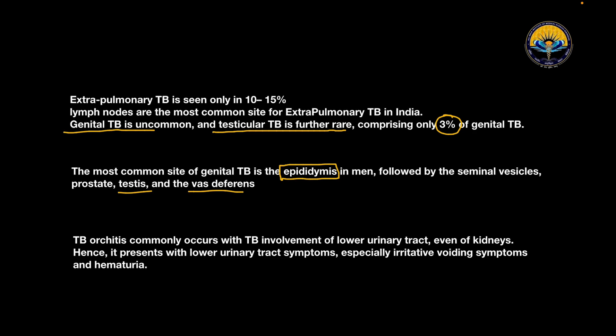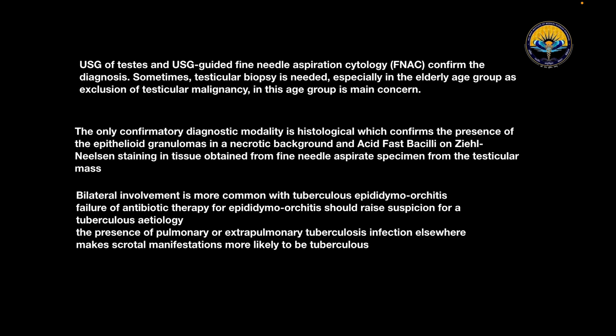TB orchitis commonly occurs with TB involvement of the lower urinary tract, even the kidneys, and hence presents with lower urinary tract symptoms, especially irritative voiding symptoms and hematuria. USG of the testis and USG-guided FNAC confirms the diagnosis. Testicular biopsy is sometimes needed especially in the elderly age group to exclude testicular malignancy. The confirmatory diagnostic modality is histological, which confirms the presence of epithelioid granulomas in a necrotic background and acid-fast bacilli on Ziehl-Neelsen staining in tissue from the fine needle aspirate specimen. Bilateral involvement is more common with tuberculous epididymal orchitis. Failure of antibiotic therapy for epididymal orchitis should raise suspicion for tuberculosis etiology.